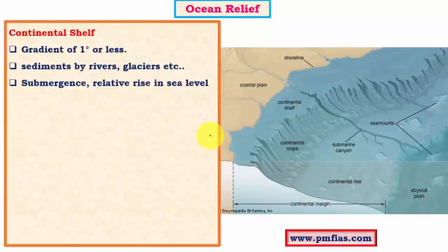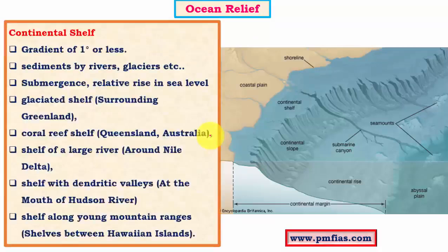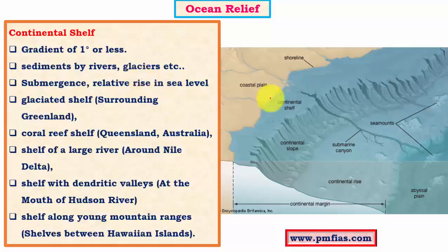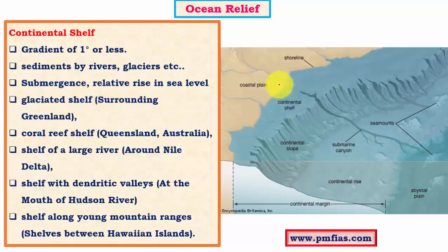Now let us look in detail at each ocean relief feature. The most important one is the continental shelf, where most human activity is confined. Here the gradient is less than 1 degree — it is very flat with very little steepness. Most of the deposits brought down by rivers and glaciers are deposited on the continental shelf region. Continental shelves are formed mainly because of subsidence of continents or rising sea level, and the continental shelf is a part of the oceanic plate.